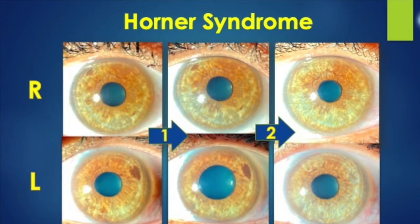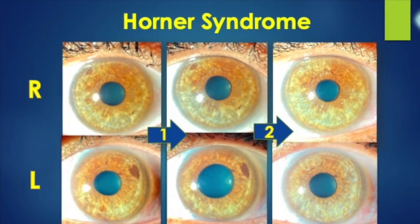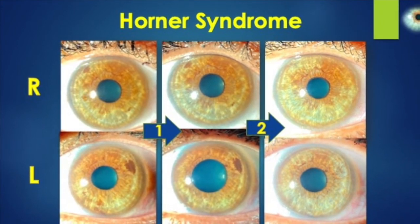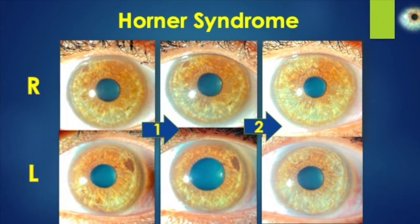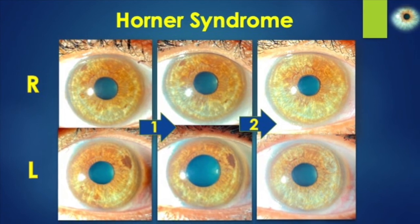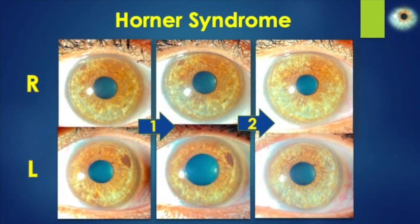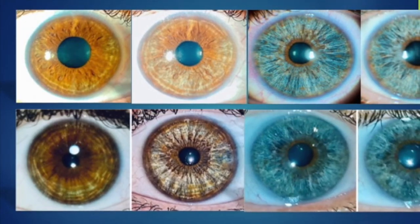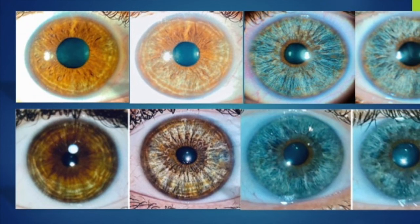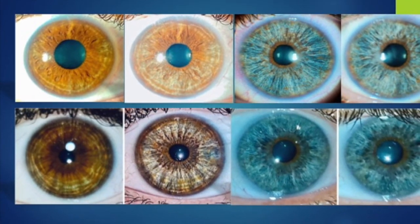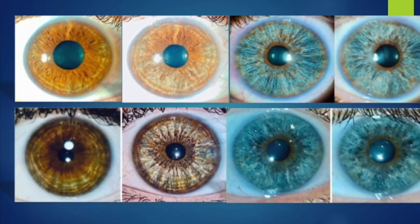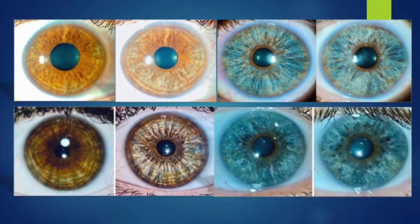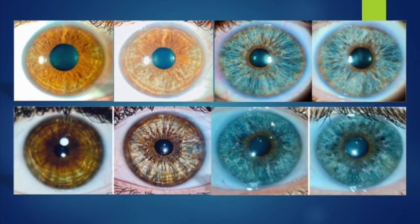This is a Horner syndrome case with molten nevus, and a positive test for apraclonidine showing monocular mydriasis — it changed color in a few days. In these two series we see the evolution from the beginning of two grade-three cases that clear up very quickly and evolve to blue in a month.